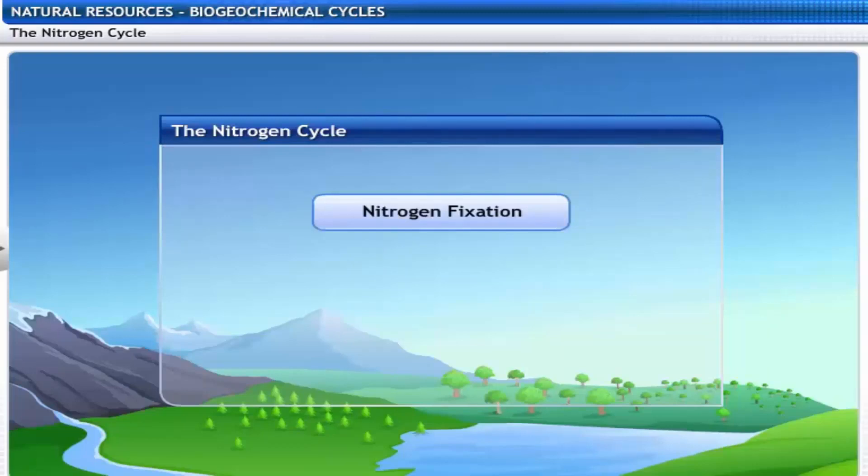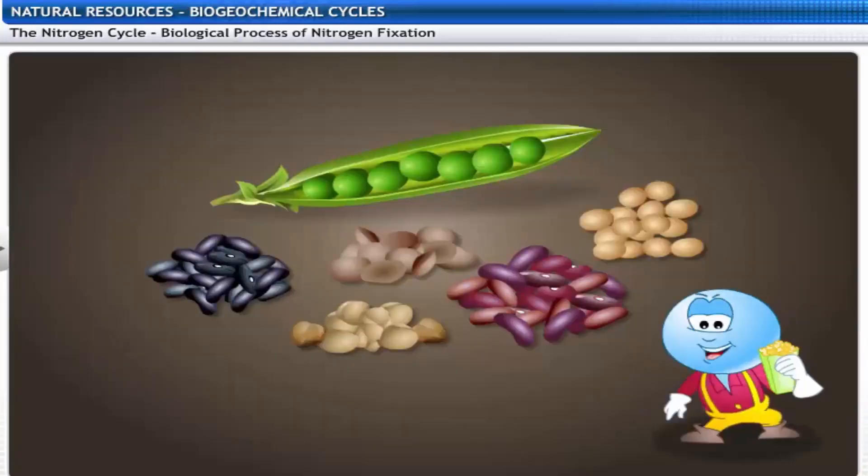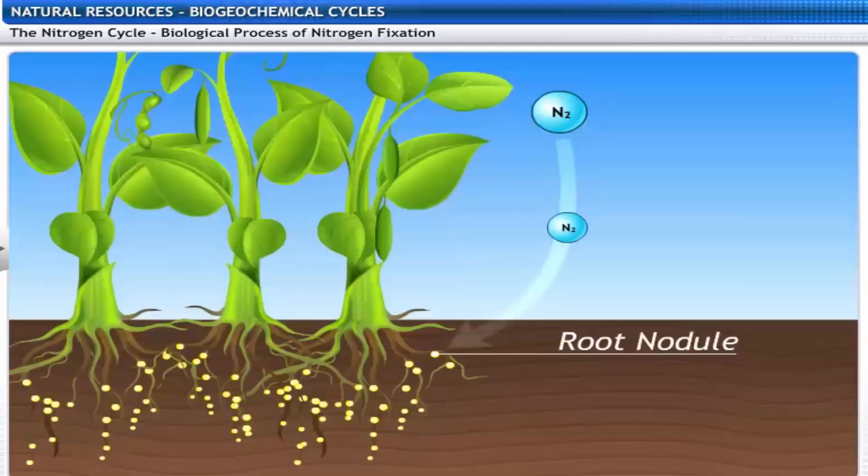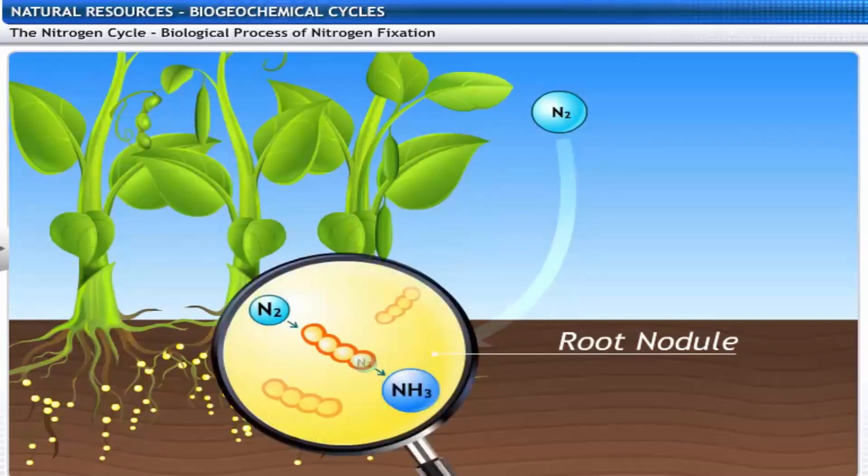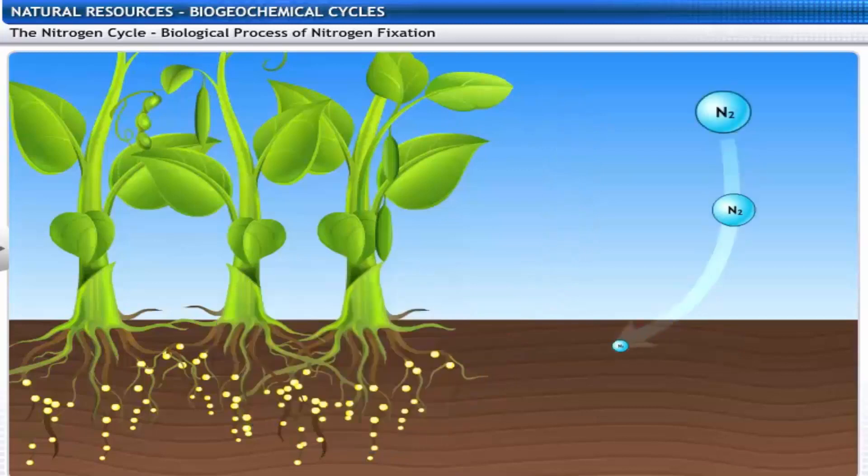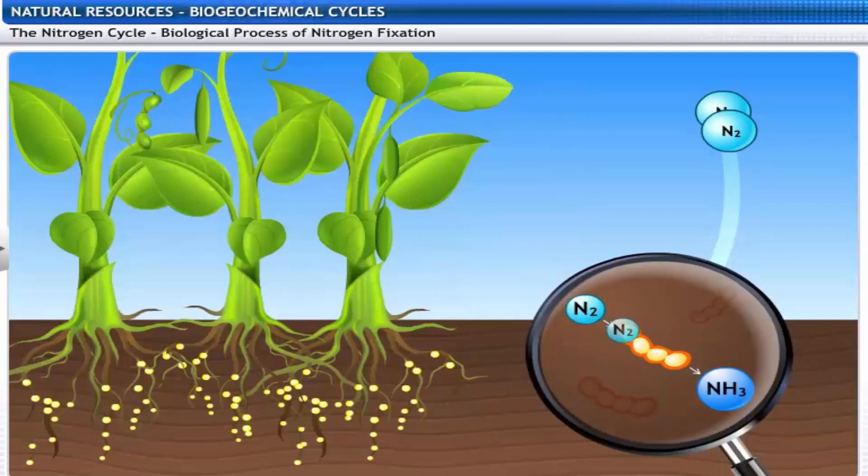Interestingly, most living organisms cannot use nitrogen directly. So, it needs to be converted into usable forms by fixation, either biologically or physically. Here are some legumes. Do you know what these are? These are nothing but pulses that you should regularly have. They are an important part of the nitrogen cycle. Let's see how. Legumes have nitrogen-fixing bacteria in their root nodules. These bacteria convert atmospheric nitrogen into ammonia, which is readily utilized by the plants. Nitrogen-fixing bacteria, along with free-living bacteria in the soil, achieve 90% of nitrogen fixation.